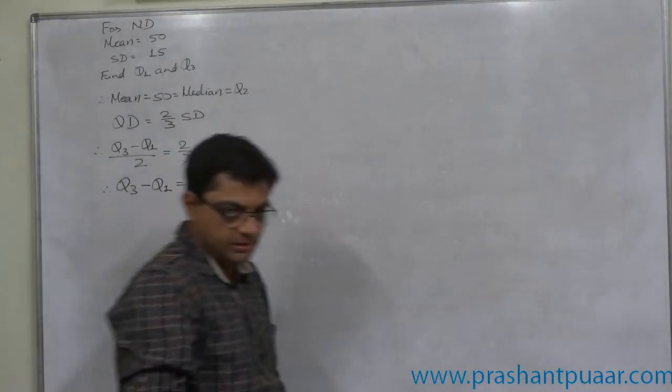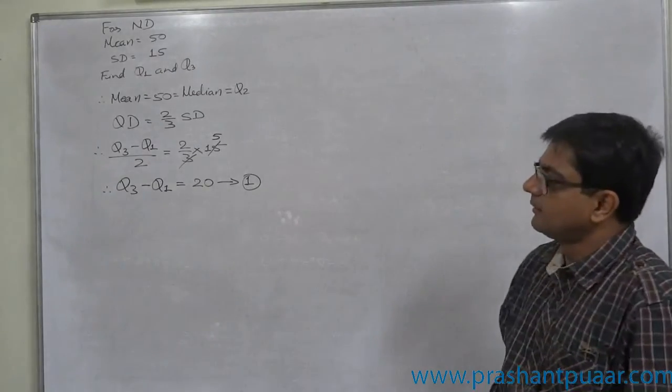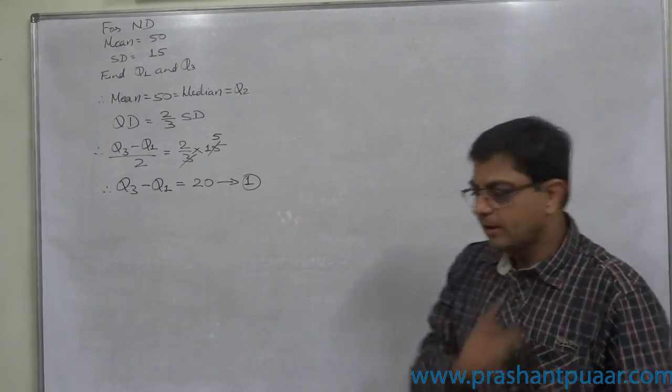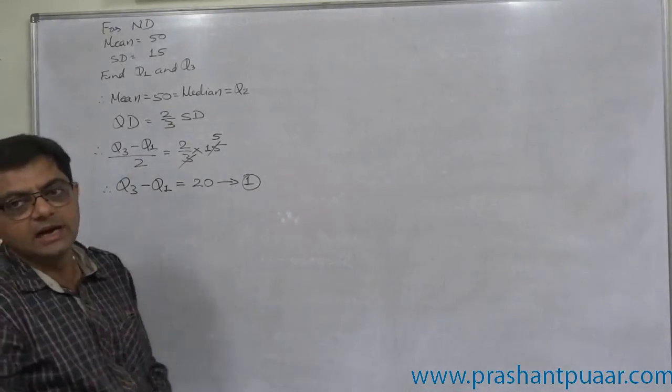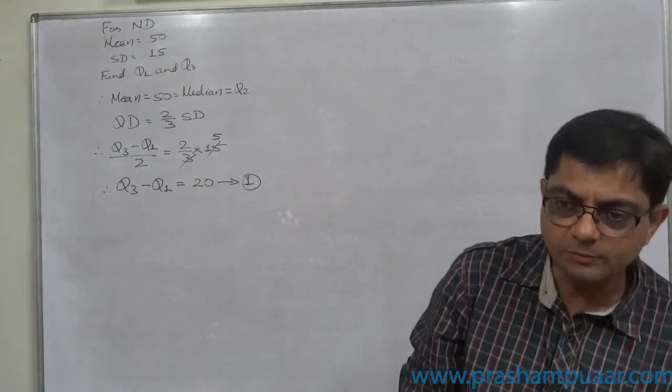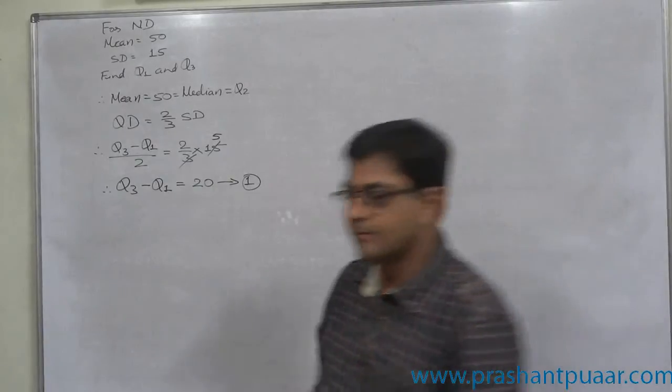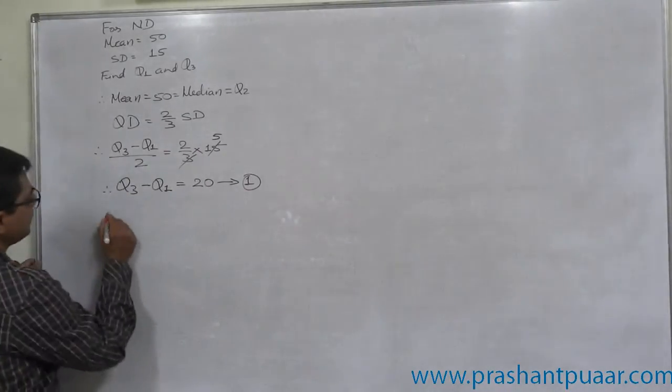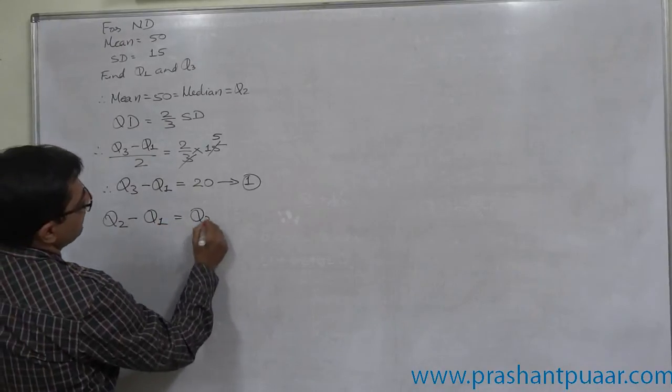This was the easier part. Now, another property of normal distribution is the quartiles are equidistant. That means, the difference between Q2 and Q1 and Q3 and Q2 are same. That means, Q2 minus Q1 equals to Q3 minus Q2.